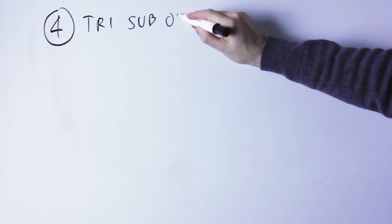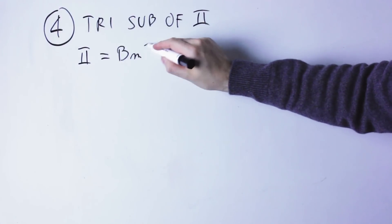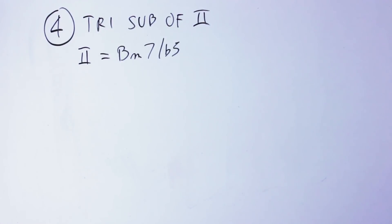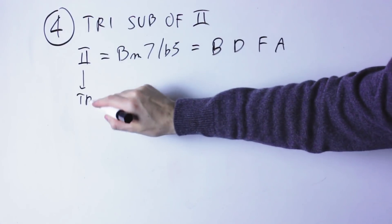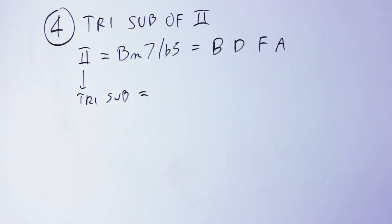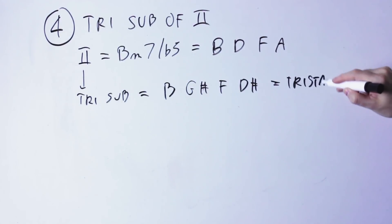Explanation number four, the Tristan chord is a tritone substitution of the second chord. The second chord in the key of A minor is the B minor 7 flat 5, notes B D F A. If you apply the tritone substitution to this chord, you do obtain a chord made by the notes B G♯ F D♯, and those are exactly the notes in the Tristan chord.